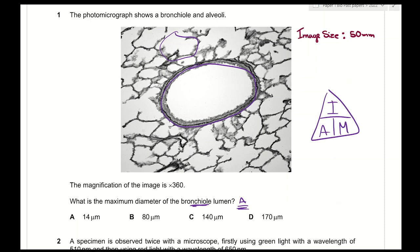Here it's asking for actual size, so we measure the image size using a ruler. The image size is 50 millimeters. Because the answers are in micrometers, we must convert by multiplying by 1000, giving 50,000. Therefore, image size 50,000 divided by 360 gives 138.8, which rounds up to 140 micrometers. The answer is C.